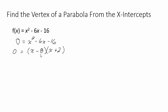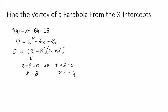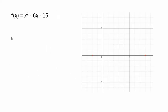We have two numbers multiplying together to be 0, and the only way that can happen is if one of them equals 0. So either x minus 8 equals 0, giving x equals 8, or x plus 2 equals 0, giving x equals negative 2. So this parabola has x-intercepts at negative 2, 0 and at 8, 0.